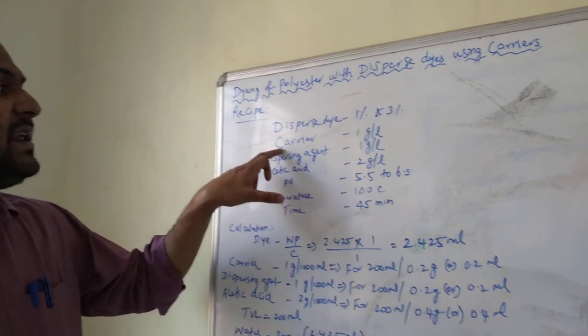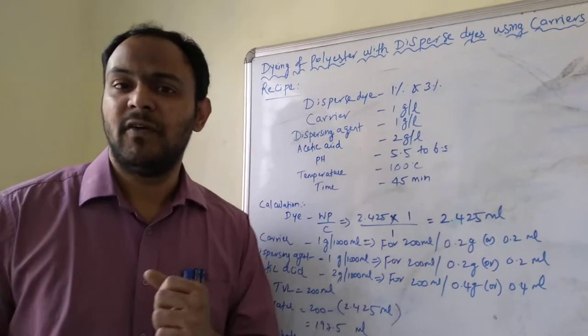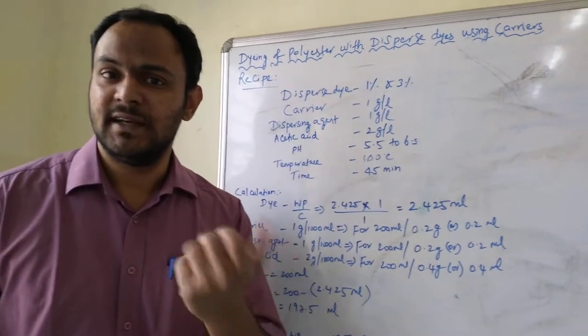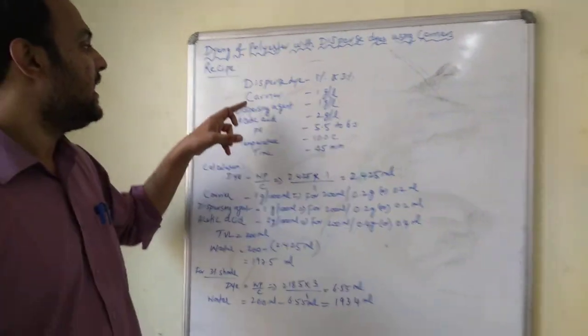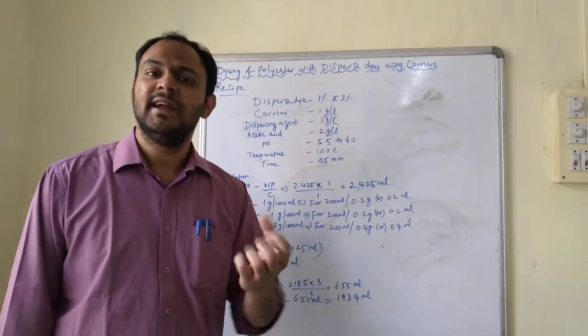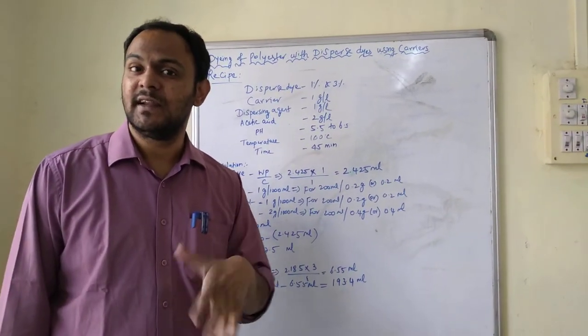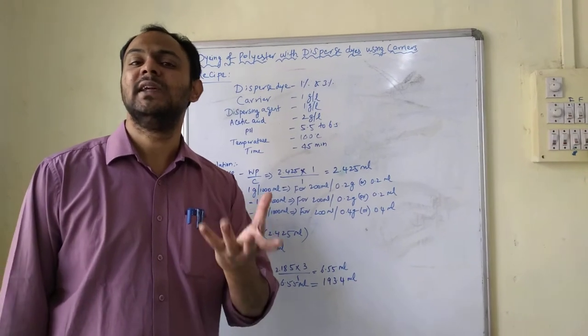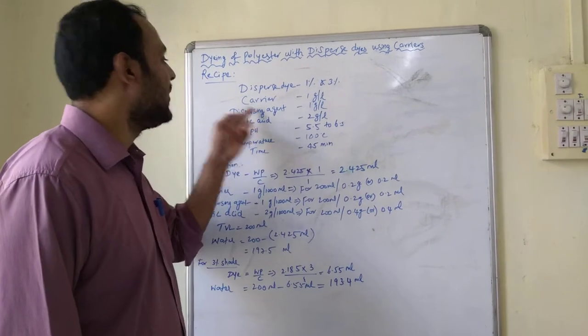This carrier is basically made up of phenolic compounds and hydrocarbons. They actually swell the polyester fiber. It creates swelling, which is otherwise done by temperature. By swelling the pores, that is done by the chemical itself.